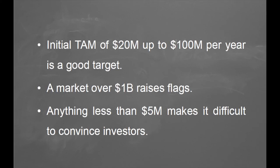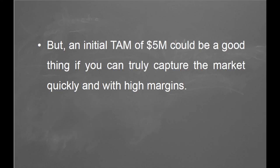An initial TAM of $20 million to $100 million is a good target. A market of over $1 billion raises flags that it's too big. Anything less than $5 million will make it difficult to achieve critical mass if you're going to be ambitious, and it won't prove to investors that it's a worthy opportunity — it's really a niche of a niche market. However, an initial TAM of $5 million could be a good thing if you can truly capture that market quickly and it has high margin, because you're very likely to be cash flow positive and establish a good beachhead.